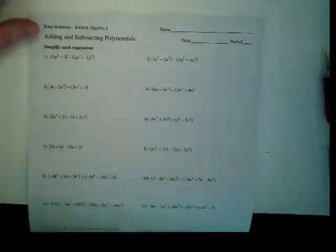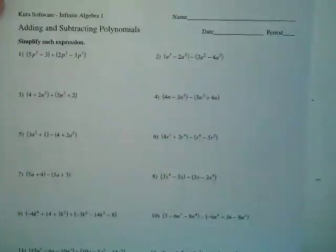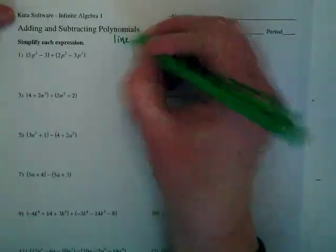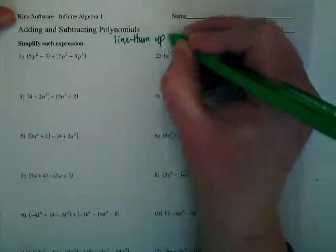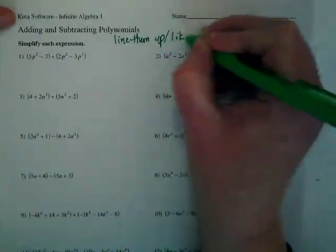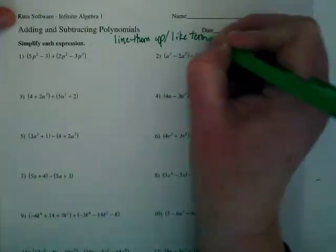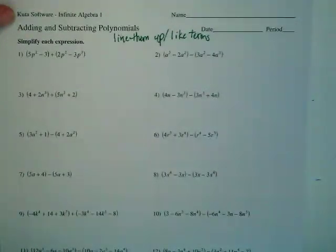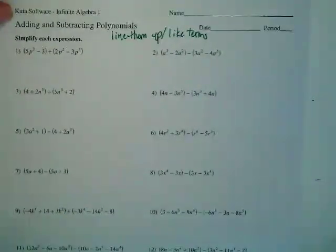When we are adding and subtracting polynomials, we line them up. We are looking for like terms. And the variables and the exponents do not change.